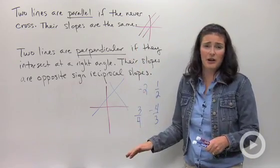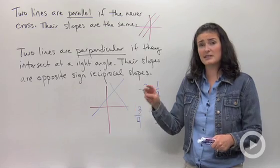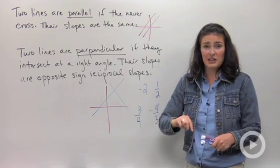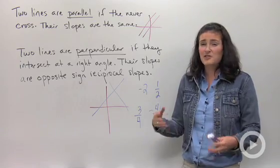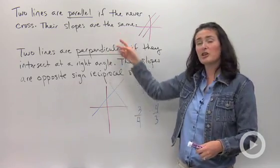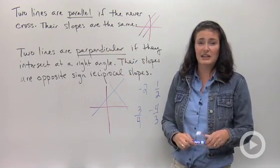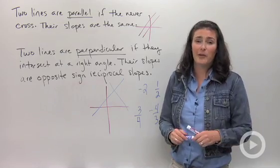These are things you'll need to memorize. Parallel: never cross, same slope. Perpendicular: cross at a right angle, opposite sign reciprocal slopes. There's no real shortcuts, but these are important definitions you'll need in algebra and geometry.